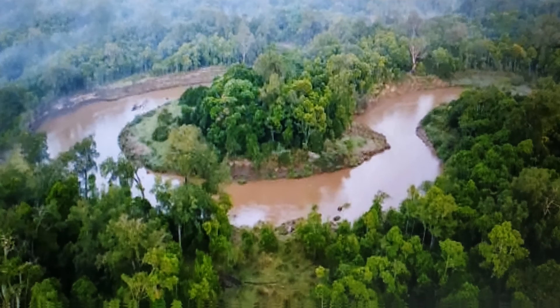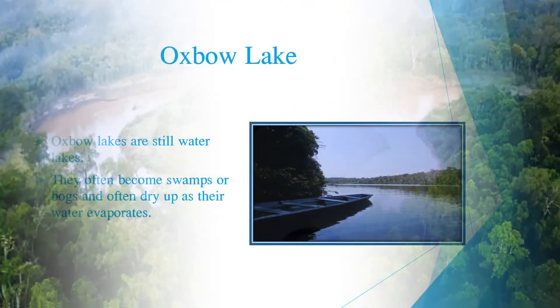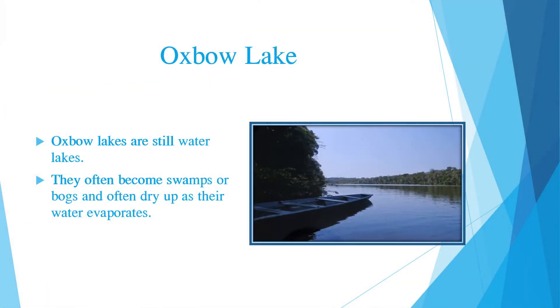Look at this muddy water of an oxbow lake. There is heavy greenery surrounding the lake — it may be a good habitat for wildlife. Oxbow lakes are still water lakes. That means the water doesn't flow into or out of them. There is no stream or spring feeding the lake and it doesn't have a natural outlet.